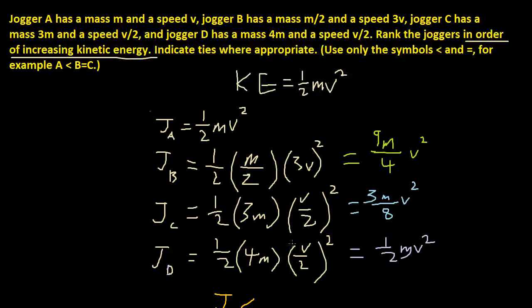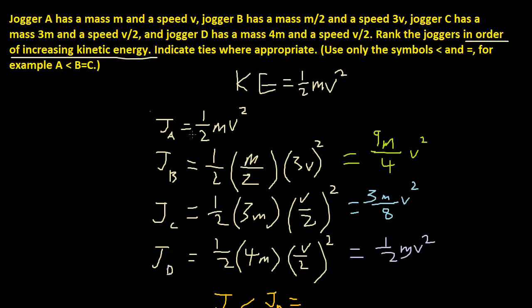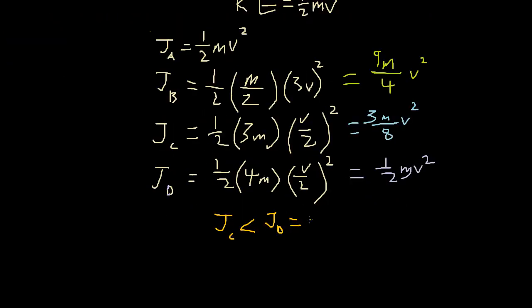And then greater is equal to jogger D. Jogger D. And jogger D is equal to jogger A because they have the same equation. So jogger A, then it's jogger A. And then we have this, which is like more than 1. So jogger B.